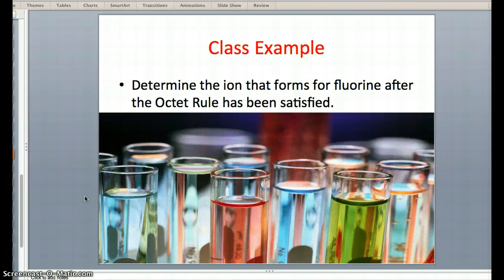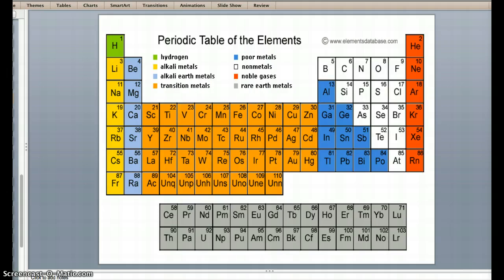Okay, so here we are attempting to determine the ion that forms for fluorine after the octet rule has been satisfied. First things first, we're going to need to look at a periodic table, find fluorine, there it is.